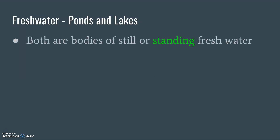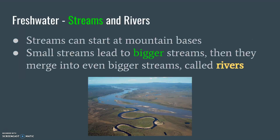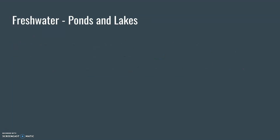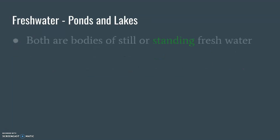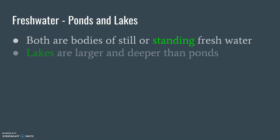Ponds and lakes are standing bodies of water. So streams and rivers are moving — they're flowing. Ponds and lakes are still or standing. Lakes are often larger, deeper, and just generally bigger than ponds.